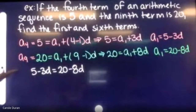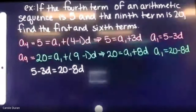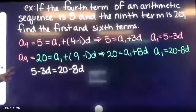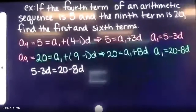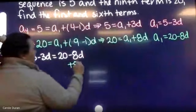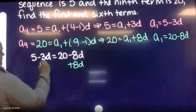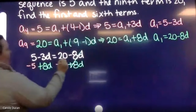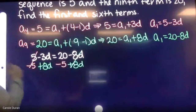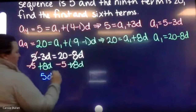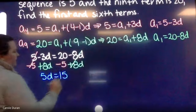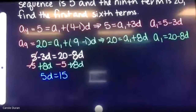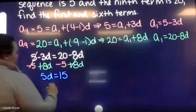Everyone okay to this point? Now I solve for d — get all d's on one side. Adding 8d to both sides and subtracting 5 gives 5d equals 15, so d equals 3.